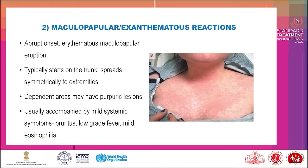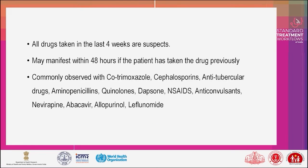Maculopapular exanthematous reaction presents with an abrupt onset erythematous maculopapular eruption, typically starting on the trunk and spreading symmetrically to the extremities. Dependent areas may have purpuric lesions, usually accompanied by mild systemic symptoms such as pruritus, low-grade fever, and mild eosinophilia. All drugs taken in the last 4 weeks are suspect.